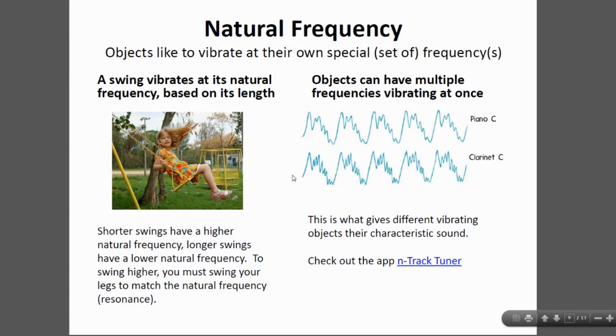When I struck the tuning fork, it emitted a single frequency. But many objects, when you strike them or set them into a vibration, they emit several different frequencies at the same time. In fact, this is what gives different vibrating objects their characteristic sound. If you weren't looking at me and I played the note C on the piano or played the note C on a clarinet, you could readily distinguish which instrument I was using because they have what's called different harmonic content. Let's learn about this.